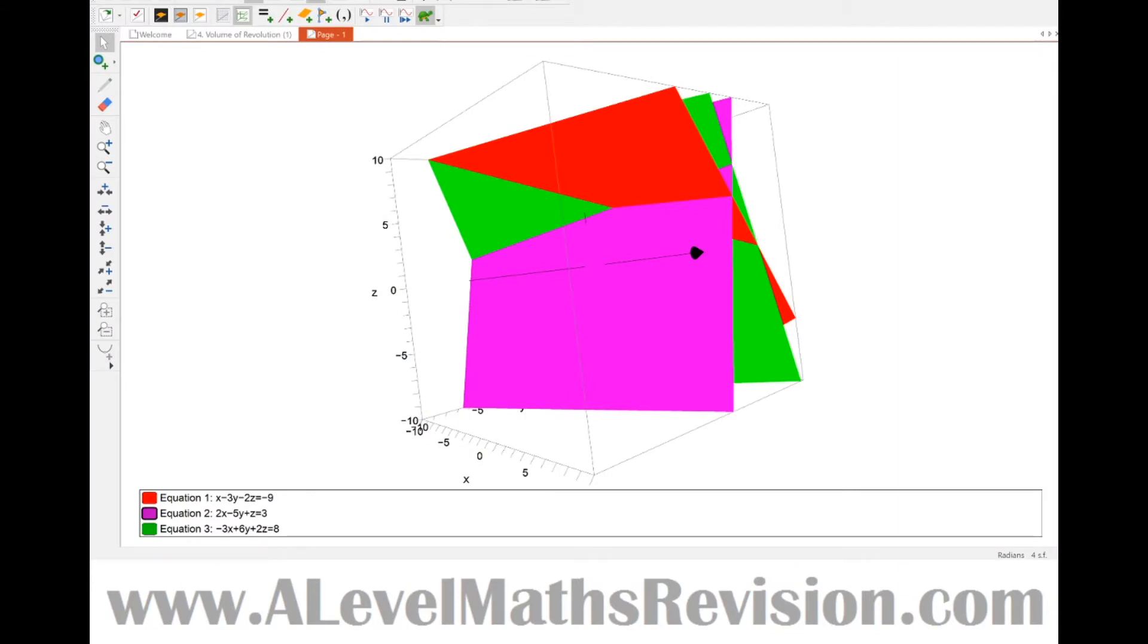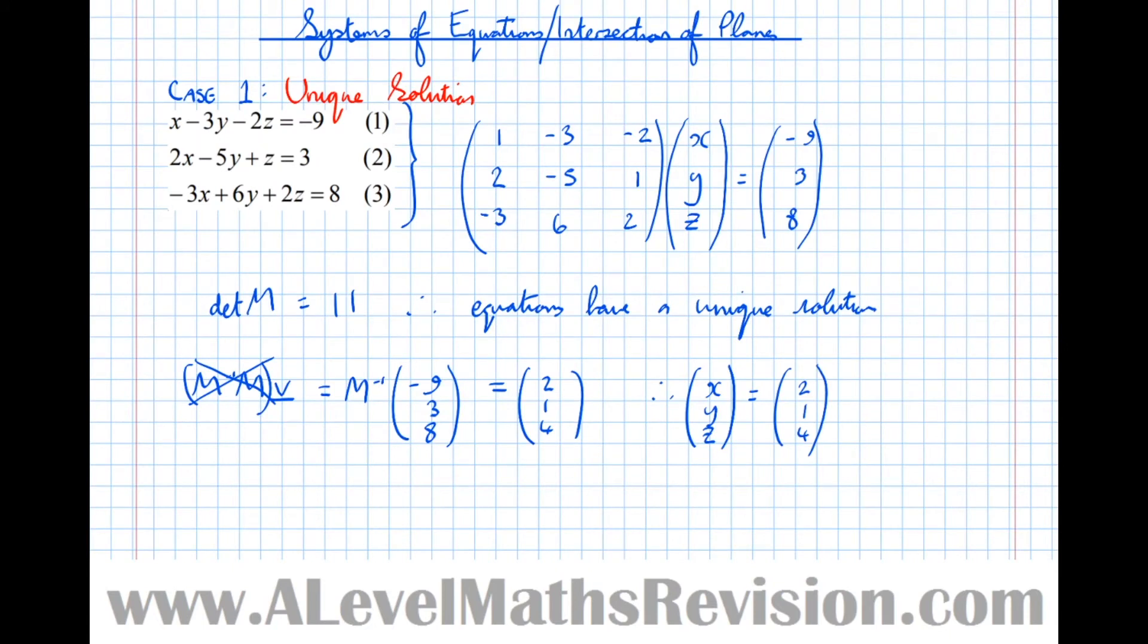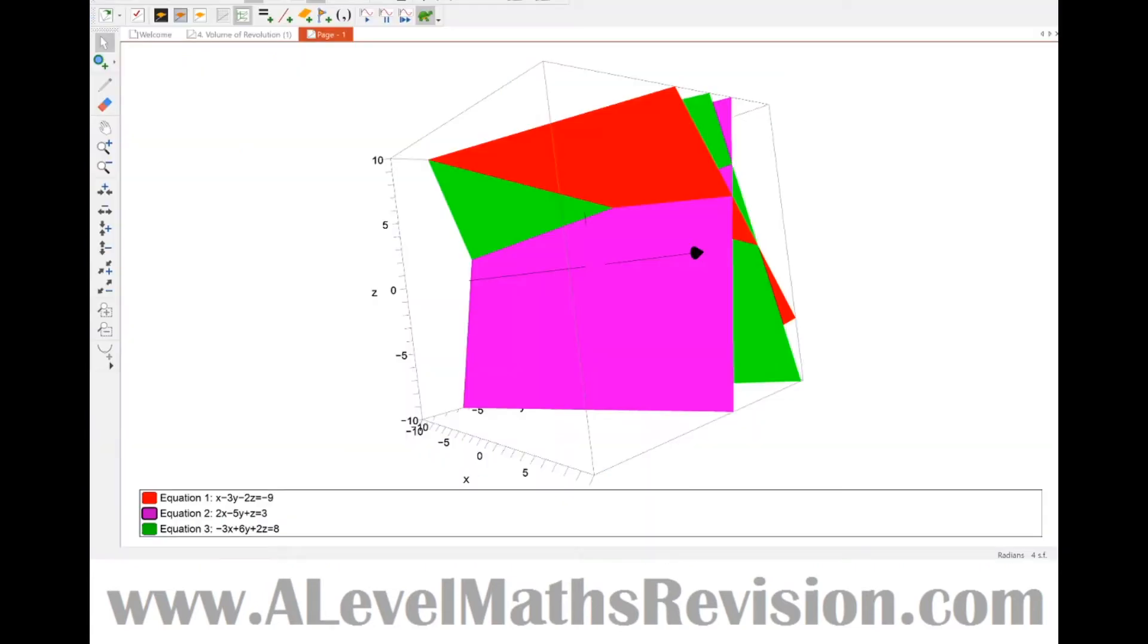So now using Autograph, I can see that I've plotted all three of these equations on the same set of three-dimensional axes, which looks to produce a bit of a mess, but we're predicting that these planes meet at a single point. So looking at this here, I can see that the planes look to meet roughly around here. So if I'm right, if I plot our proposed solution, which was, as we can see, 2, 1, 4. If I plot that point on here, I'm predicting that it should be that particular point there. So that point should be 2, 1, 4. So let's go and plot that point in autograph.